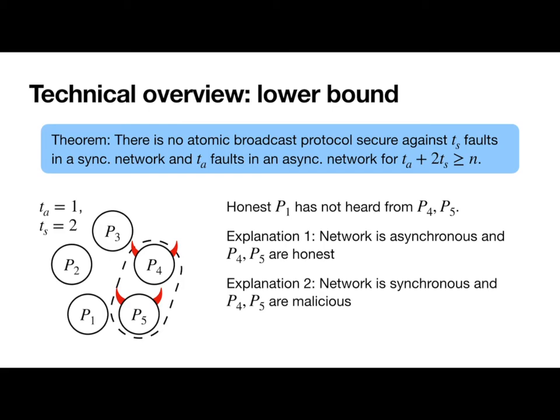If they're malicious, then P1 can't wait for them forever because this contradicts liveness. On the other hand, if they're actually honest and P1 moves on without them, we might violate consistency. So in the proof, we formalize this intuition by proving that there is a synchronous execution with at most TS faults and an asynchronous execution with at most TA faults that are indistinguishable from the perspective of an honest party, and then showing that in at least one of these executions, security must be violated.